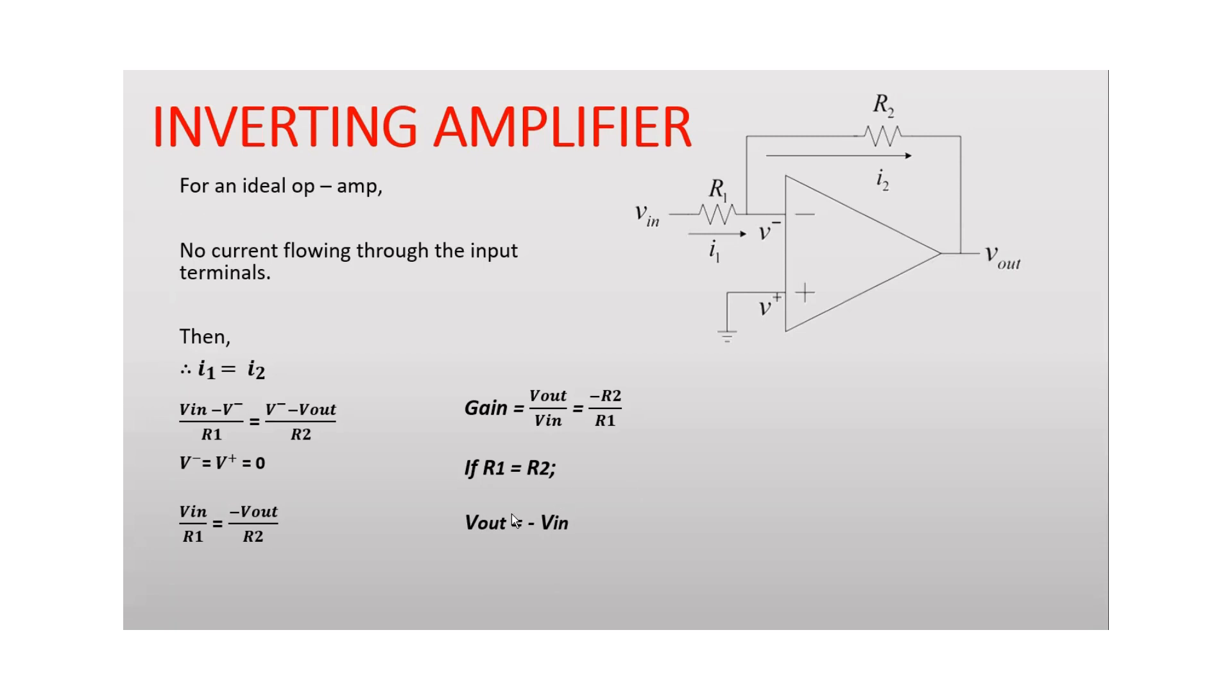Then Vin over R1 is equal to minus Vout over R2. The gain Vout over Vin, then we can say, is minus R2 over R1.